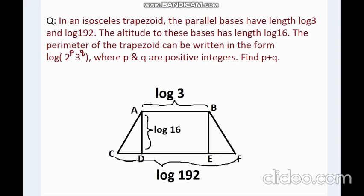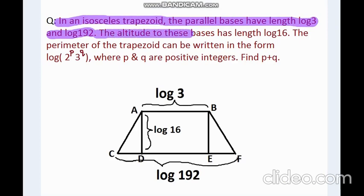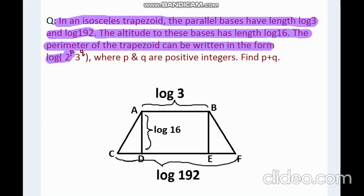In an isosceles trapezoid, the parallel bases have length log 3 and log 192. The altitude to these bases has length log 16. The perimeter of the trapezoid can be written in the form log(2^p × 3^q), where p and q are positive integers. Find p+q.